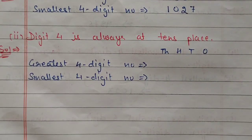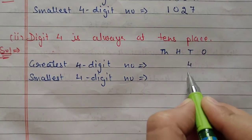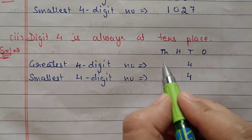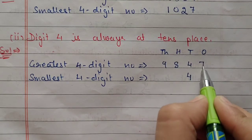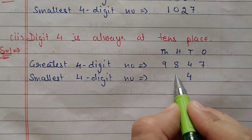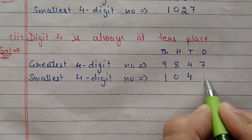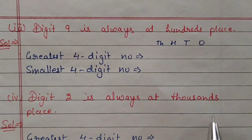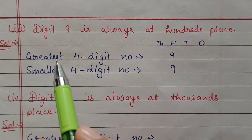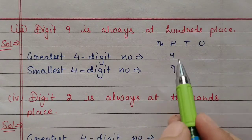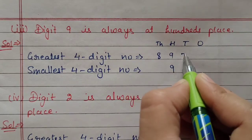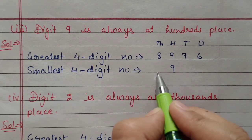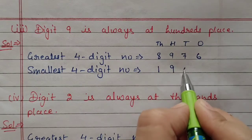Second condition: digit 4 is always at the tens place, so that place is fixed. For greatest 4-digit number, fill remaining 3 places with 9, 8, and 7, giving 9874. For smallest, use 0, 1, 2, 3 — keeping 0 at ones place and 1 at thousands place, giving 1024. Third condition: digit 9 is always at hundreds place. For greatest, since 9 is used, start with 8, 7, 6, giving 8976. For smallest, use 0, 1, 2 — do not put 0 at thousands place, so 1 at thousands, 0 at tens, 2 at ones: giving 1092.